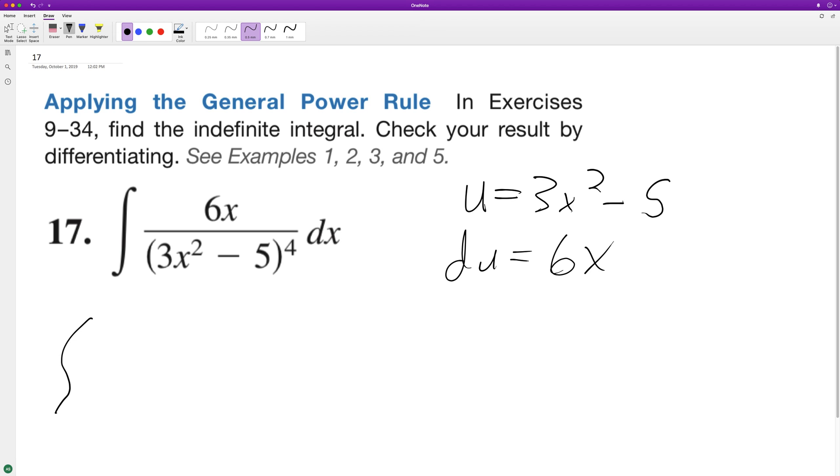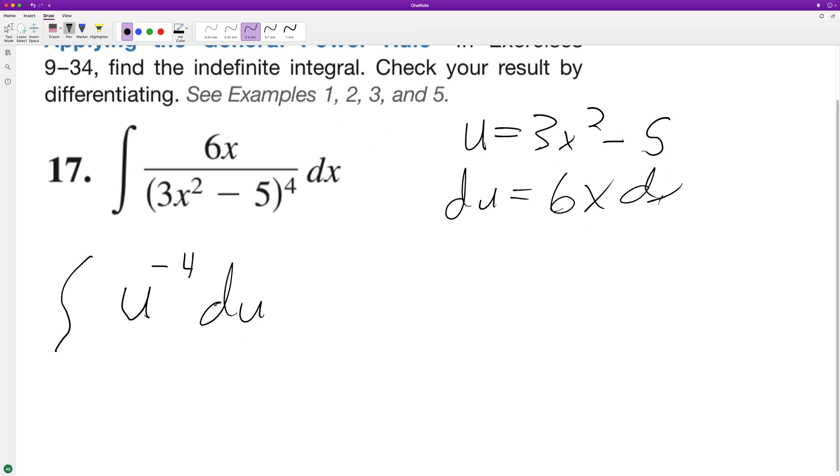This will be equal to u raised to the negative 4th—that's the same thing as 1 over u to the fourth—and then we'll just have our du. Now when we integrate, we're gonna have u raised to the negative 4 plus 1 over negative 4 plus 1 plus C.